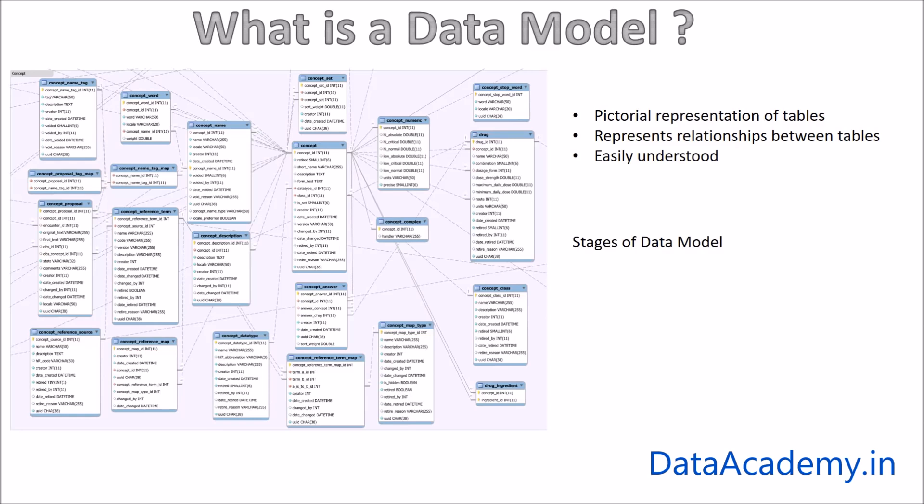This includes transactional systems as well as data warehouse systems. When a data model is being designed, we progress through three main stages: they are conceptual data model, logical, and physical data model in this order.